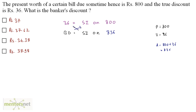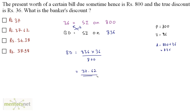Just cross multiply and equate and you can get the value of BD, that is the banker's discount. So the banker's discount equals Rs. 836 times 36 divided by 800, and that gives you Rs. 37.62. So our answer is option B, Rs. 37.62, which is the banker's discount.